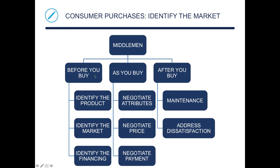For middlemen situations — before you buy, you identify the product, identify the market, and identify the financing. As you buy, you negotiate. This applies when you're buying a house or buying a car — you negotiate the price and negotiate payment. After you buy, you have maintenance to do and then you can address satisfaction. It sounds pretty comparable to buying a car or a house.